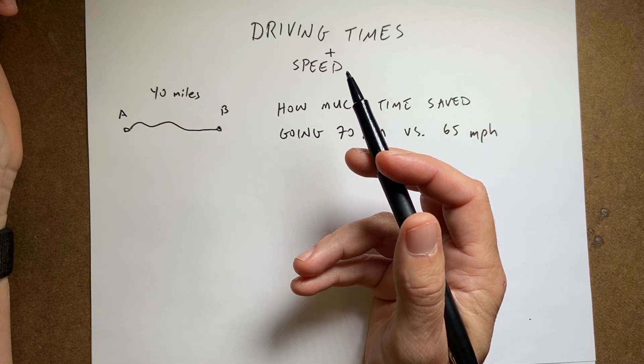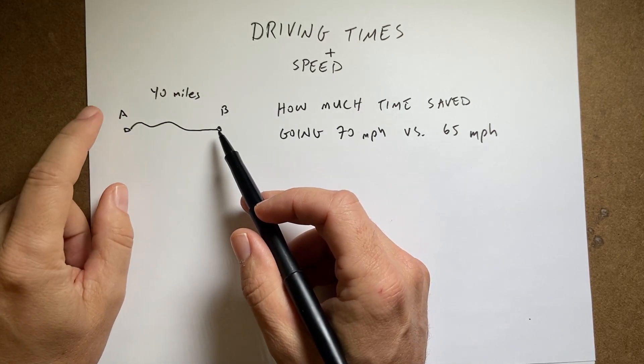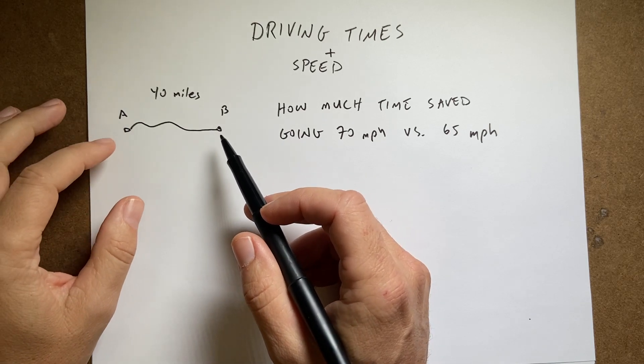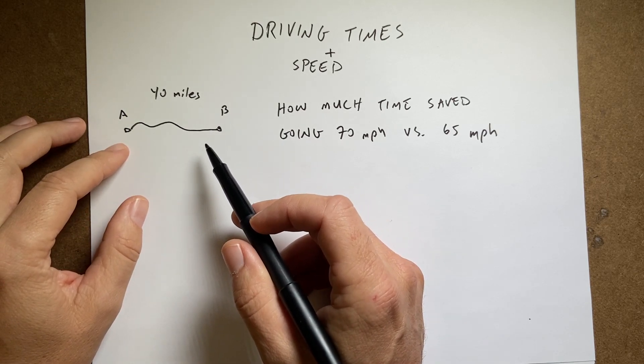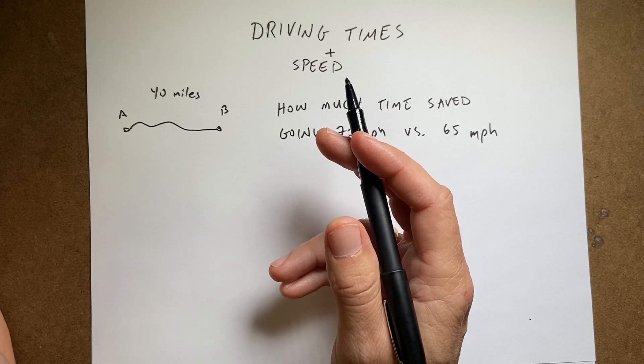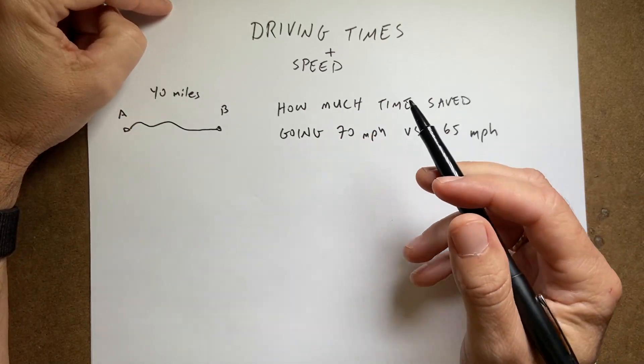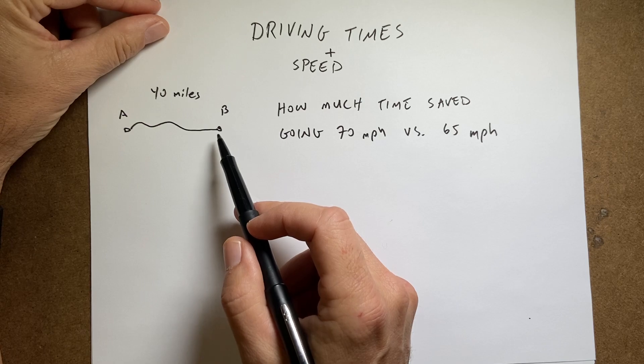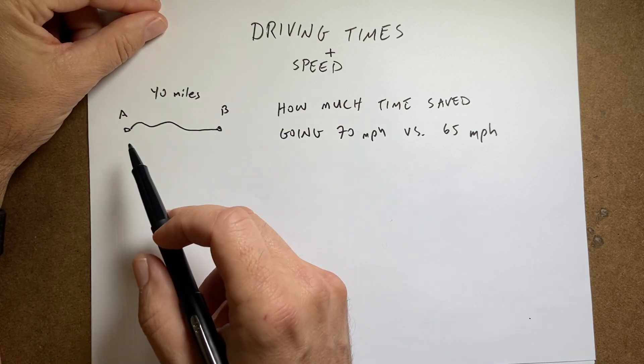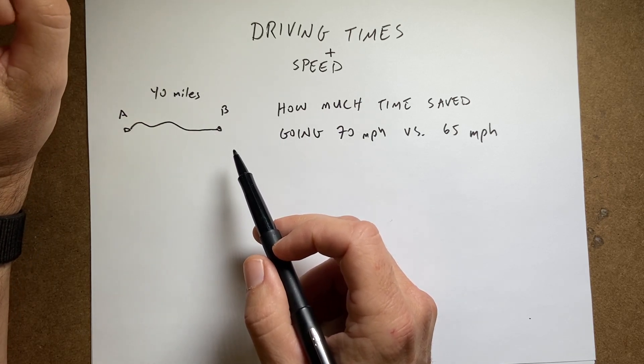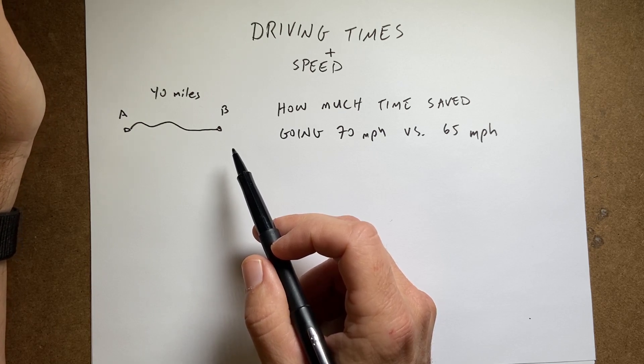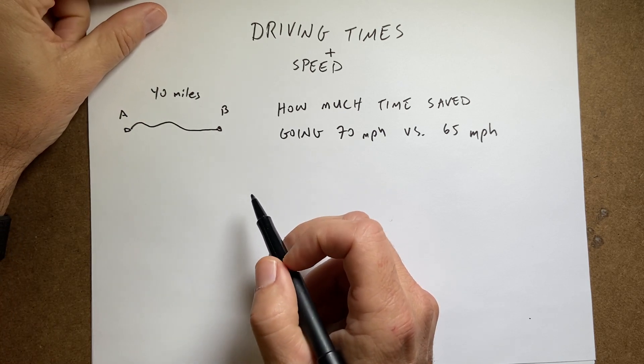And I'm doing that because we have people around here that go between two towns that are actually about 40 miles apart. And you can get there on the interstate. So you could drive, the speed limit is 70 miles per hour. So let's say you go from A to B going 70 miles per hour, and then you go from A to B with an average speed of 65 miles per hour. How much time do you save by going 70 miles per hour instead of 60?